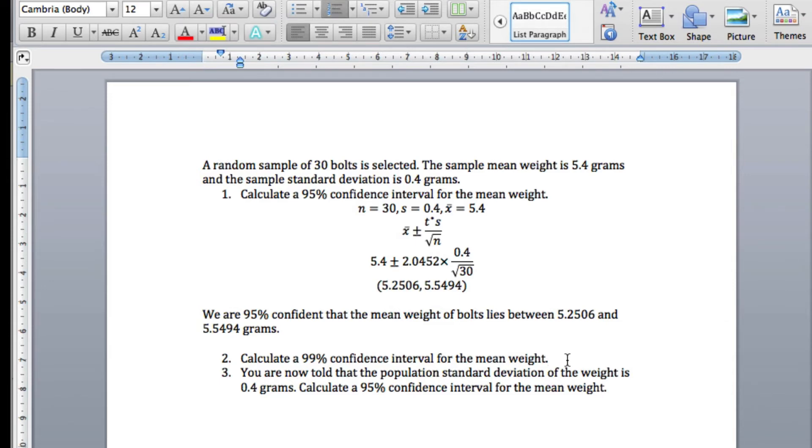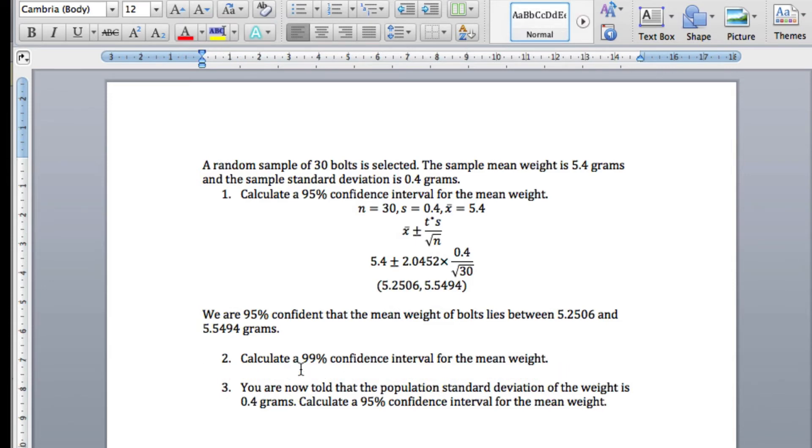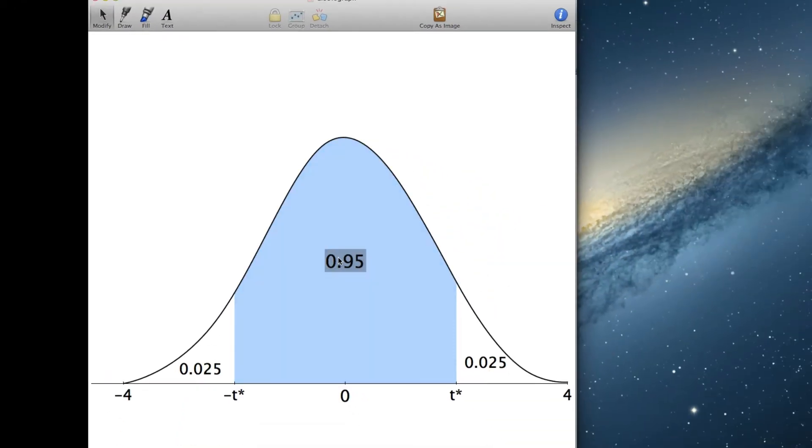Now let's look at the second question. Now on this one, we want a 99% confidence interval for the mean weight. So, we still have n equals 30, s equals 0.4, x bar equals 5.4. The thing that's going to change is the t star. So, let's go back to this diagram. So, now in here, instead of 95, we're going to have 99. So, again, this area plus this area must equal 1 minus this, which is 0.01. So, therefore, this must be 0.01 divided by 2, which should be 0.005. And this will also be 0.005.